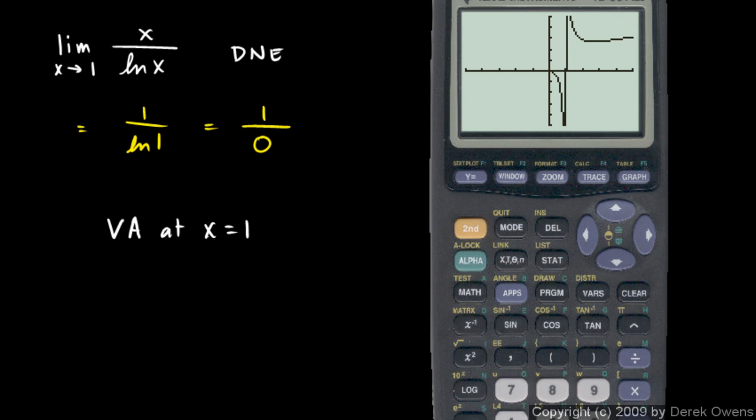So as x approaches 1 from the left, the function is heading toward negative infinity, and as x approaches 1 from the right, it's heading toward positive infinity.